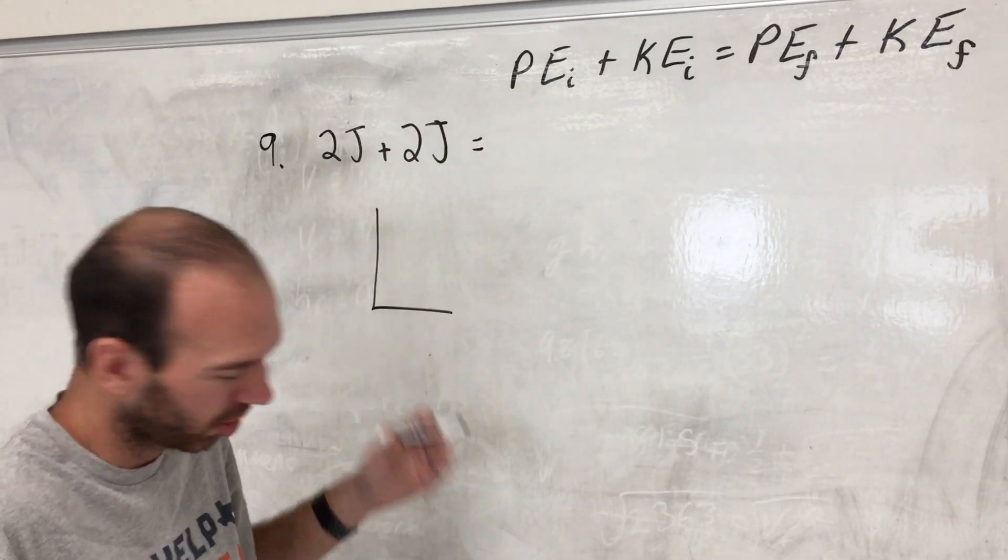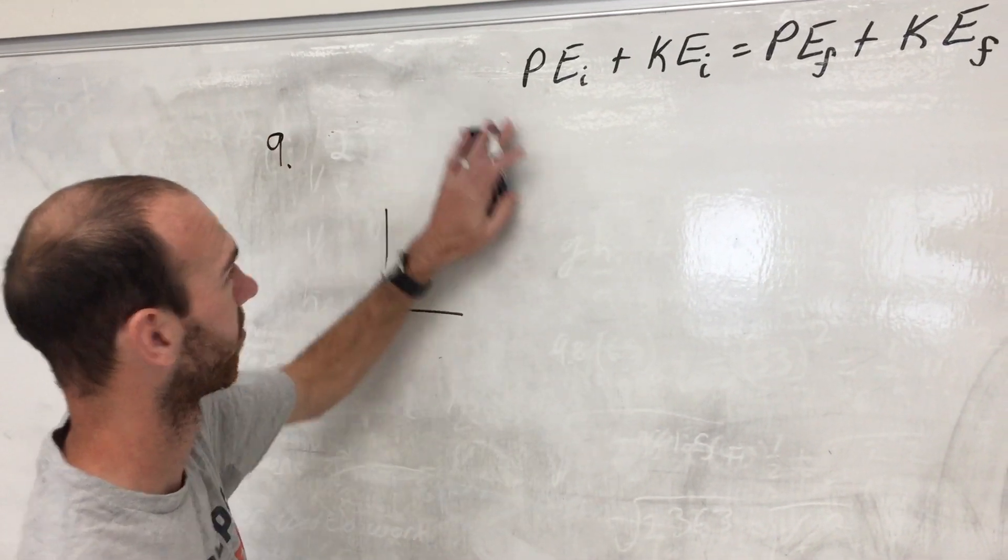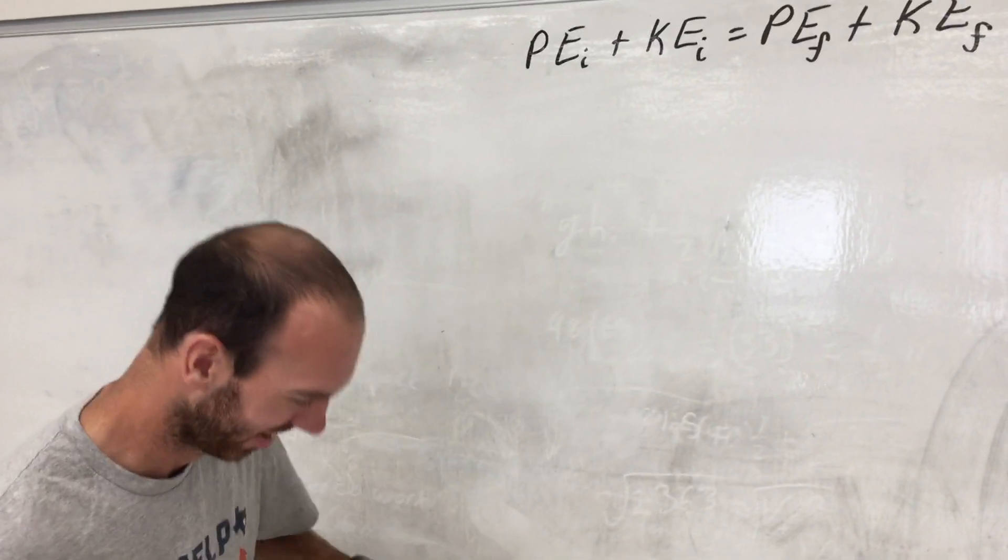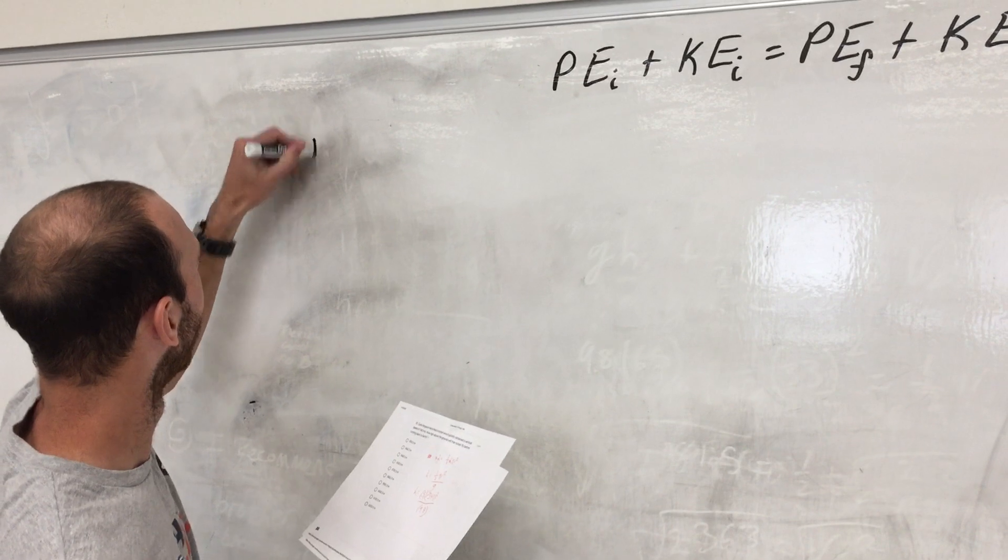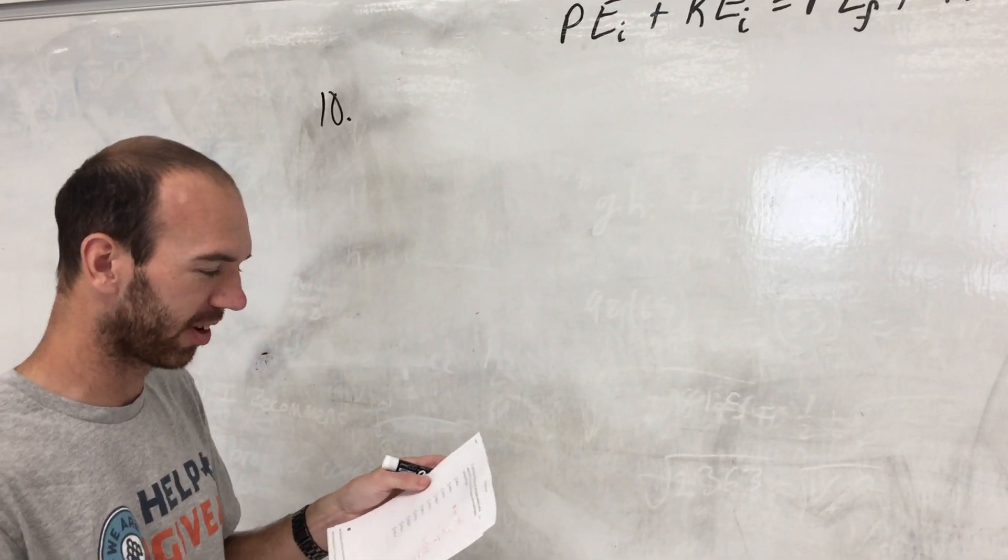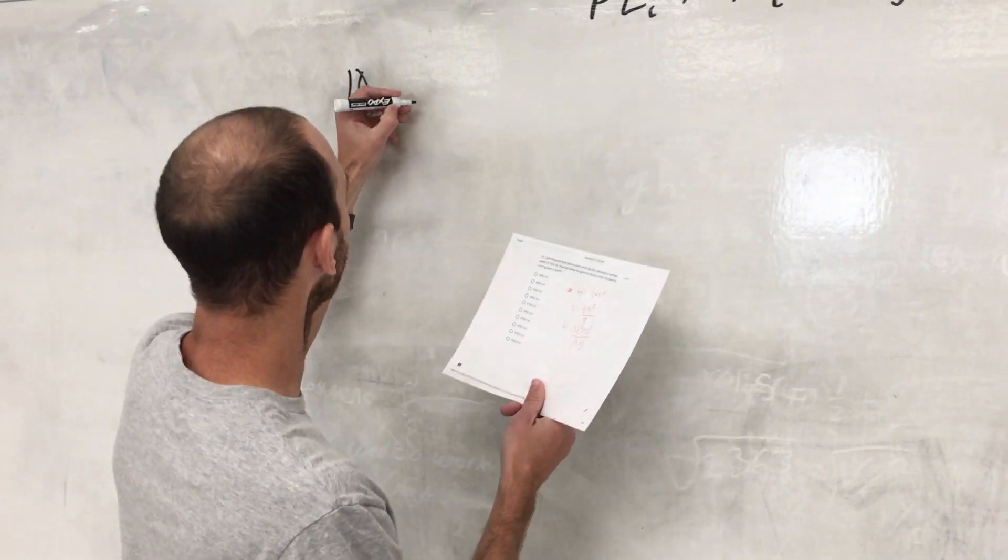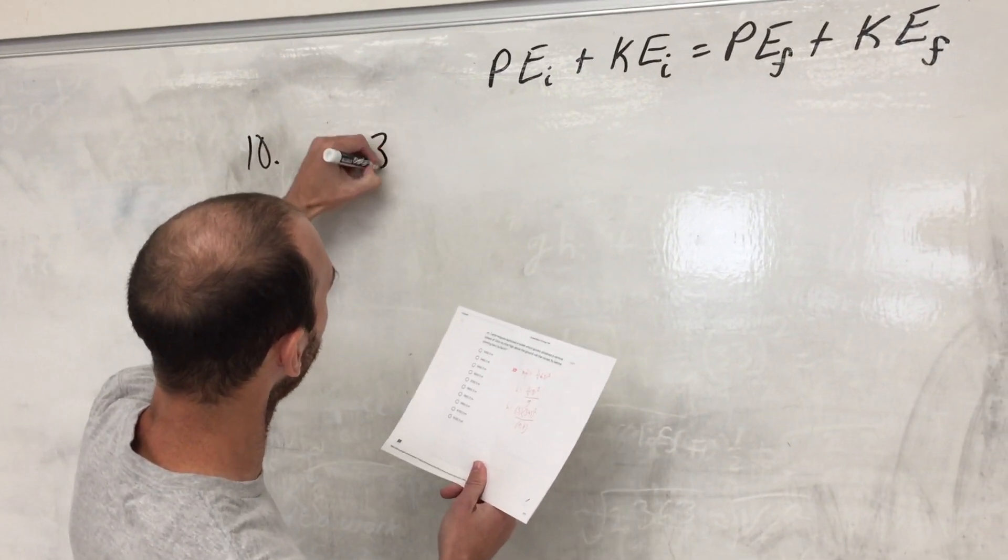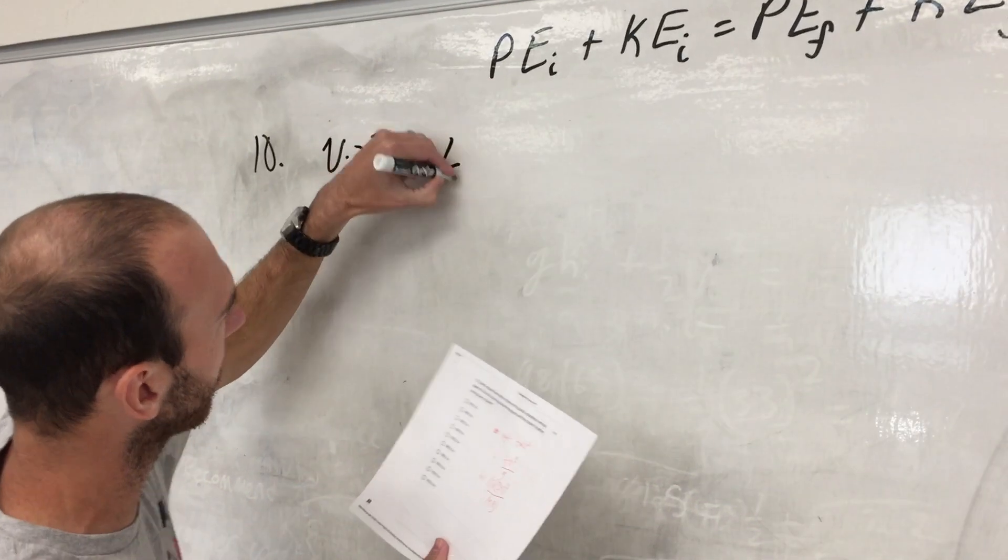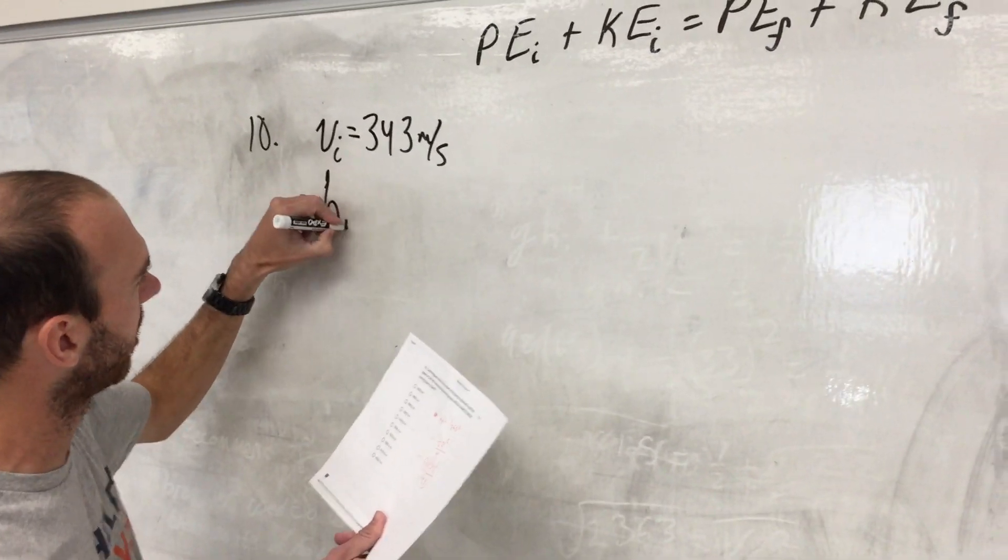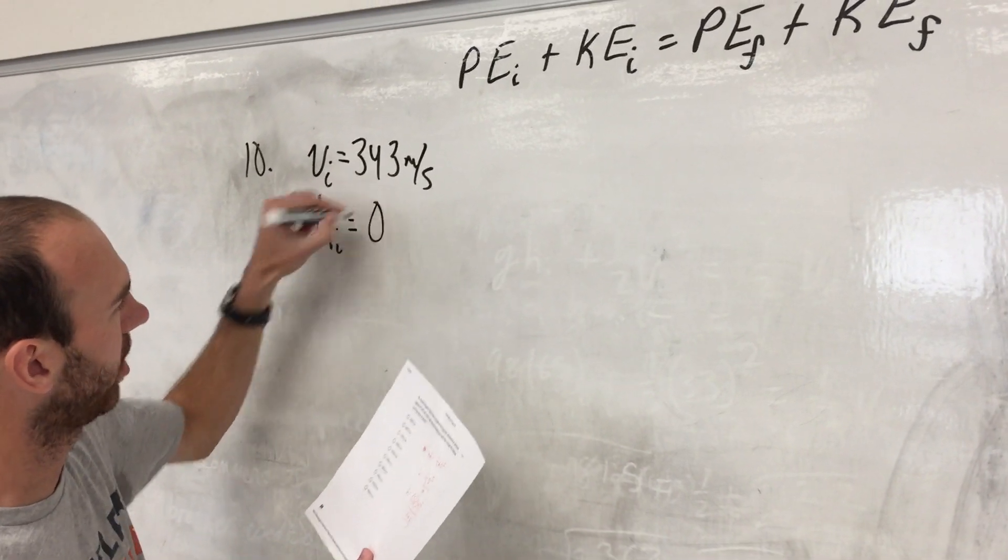Number ten, Carla Ferguson obviously launched a rocket with an initial speed of 343 meters per second, and we're going to say that the initial height is zero at whatever speed that's at.